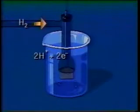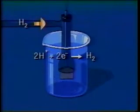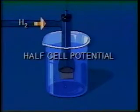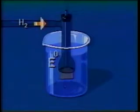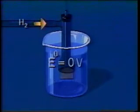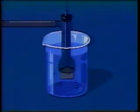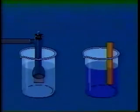At the electrode, hydrogen ions unite with electrons to form molecules of hydrogen. The tendency for an element to be reduced in this way is called its half-cell potential. A half-cell potential of zero volts is assigned to hydrogen as the standard. Remember that no reaction occurs in this half-cell unless there is another half-cell.